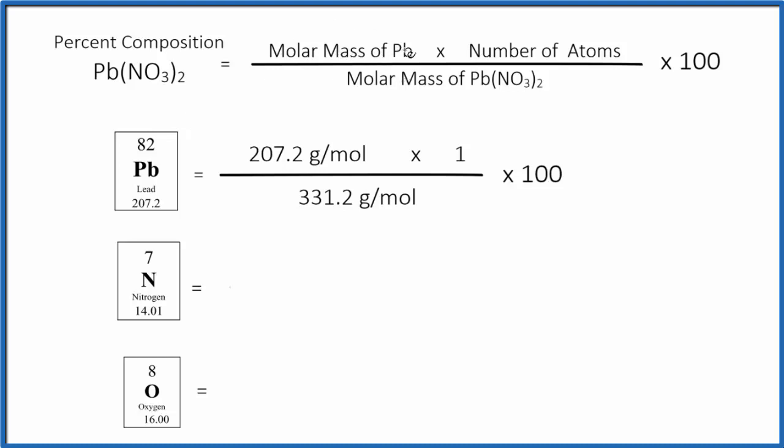We take the molar mass of the atom we're interested in, that's the Pb here, and on the periodic table, Pb is 207.2 grams per mole. Then we multiply that by the number of atoms. For lead, there's one lead atom, so we're just going to multiply that by 1, and then we'll divide all of this by the molar mass of Pb(NO3)2.